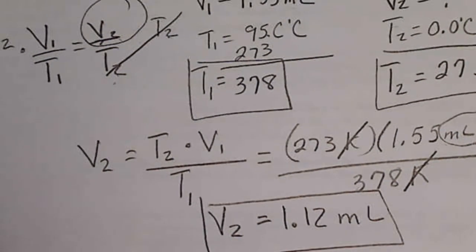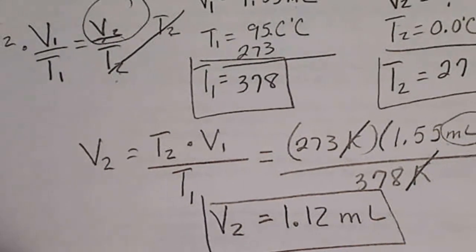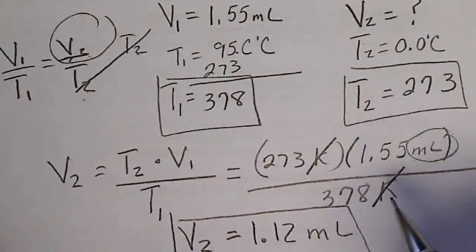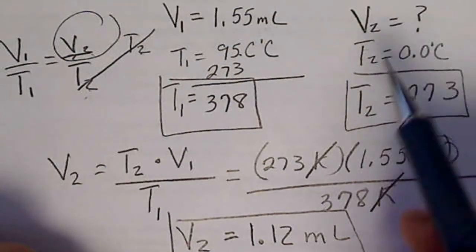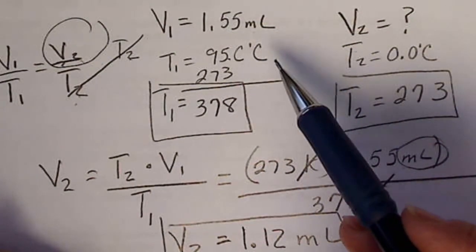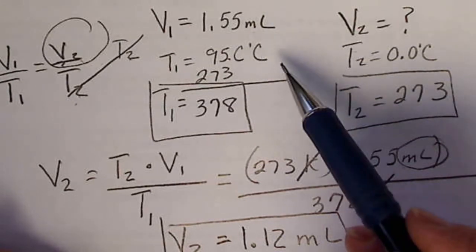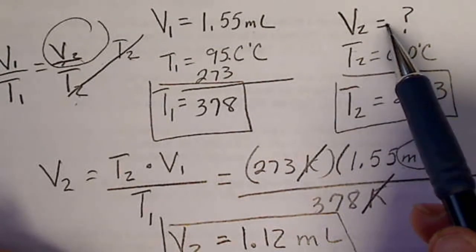And again, since this is Charles' law, you should be able to check this. Our volume had better change in the same direction that our temperature changes. In other words, we know that if the temperature goes down, then the volume is going to go down.